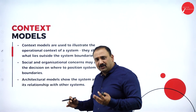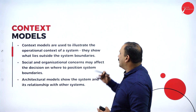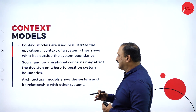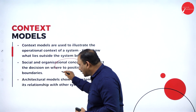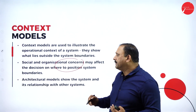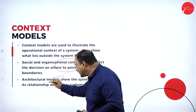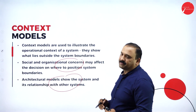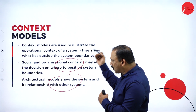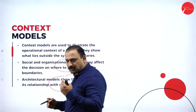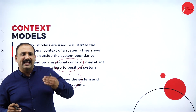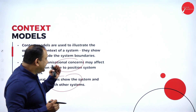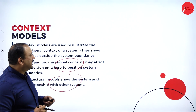Context models are basically used to illustrate the operational context of the system — what lies outside. Social and organizational concerns determine where decisions are going to be made within the boundaries. Architectural models show the system and its relationship with other systems. So you will have a context primarily talking about the internal, external, the decisions that are made, and the architectural models that come into picture.